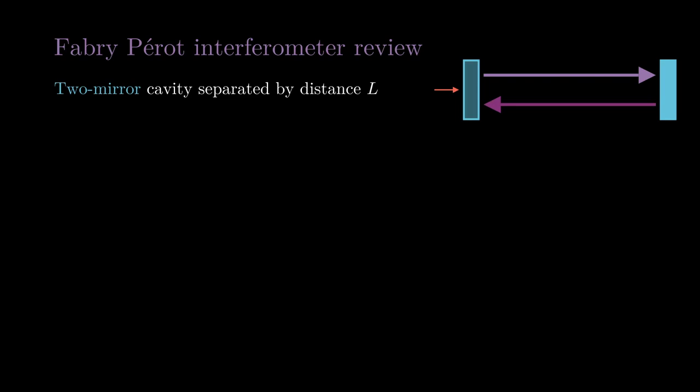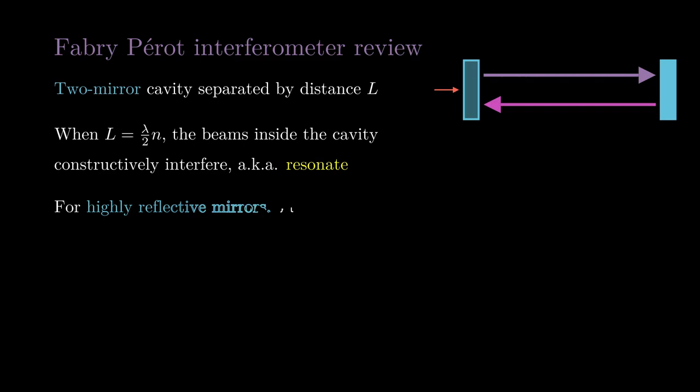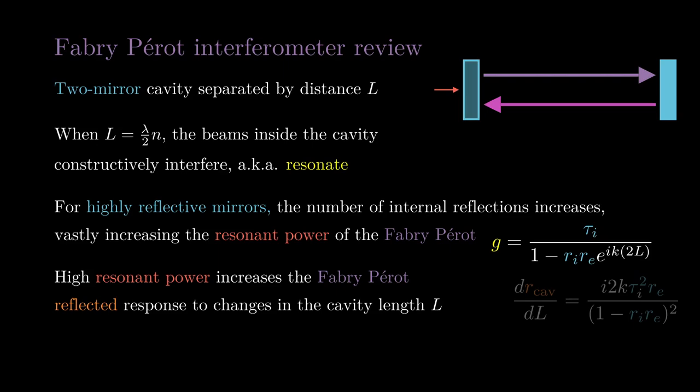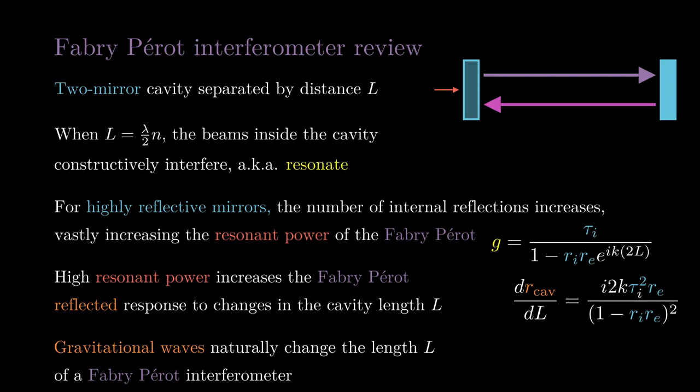Let's quickly review everything we just learned about Fabry-Perot interferometers. They are just two mirror cavities that are separated by some distance L. When the length of the cavity is equal to the half-integer wavelength of the laser beam, the beams inside the cavity will resonate. For Fabry-Perots with highly reflective mirrors, the number of internal reflections will increase, increasing the resonant power inside. Fabry-Perots with high power inside are also highly sensitive to length changes. Finally, gravitational waves will naturally change the length L of a Fabry-Perot interferometer.